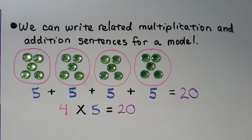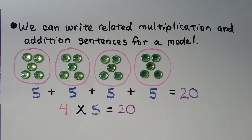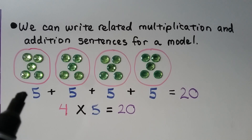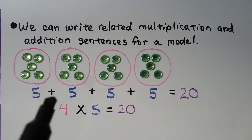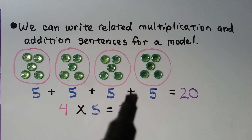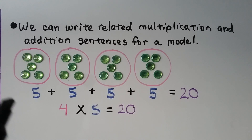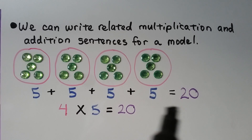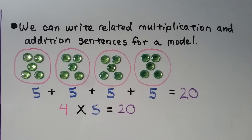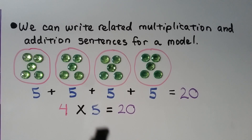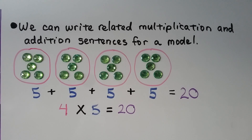We can write related multiplication and addition sentences for a model. We have four circles — four groups — and there are five gems in each group. We have repeated addition: five plus five plus five plus five equals five, ten, fifteen, twenty — twenty green gems. With four groups of five, we have four times five is equal to twenty.